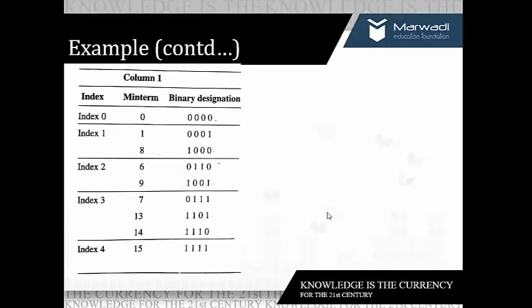Now we club all these into groups such that each group comprises an equal number of ones. Index 0 comprises zero ones, index 1 comprises a single one, index 2 with two ones, and so on.